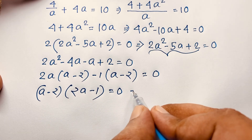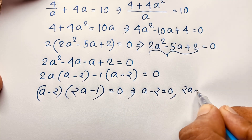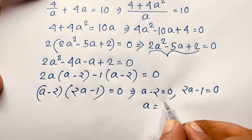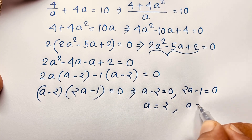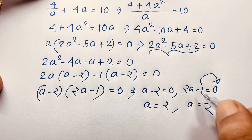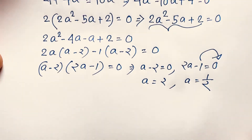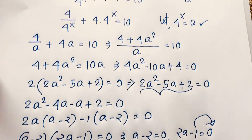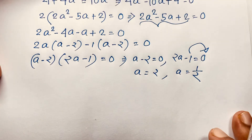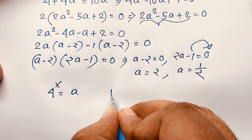Therefore (a minus 2)(2a minus 1) equals 0. This gives two cases: a minus 2 equals 0, so a equals 2; or 2a minus 1 equals 0, so a equals 1 over 2. Now recall that a equals 4 to the power x.